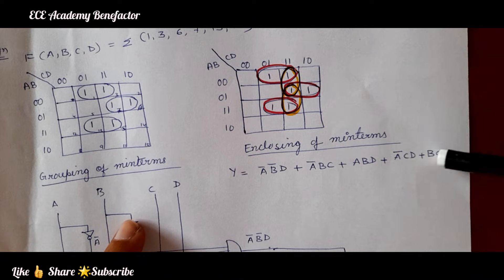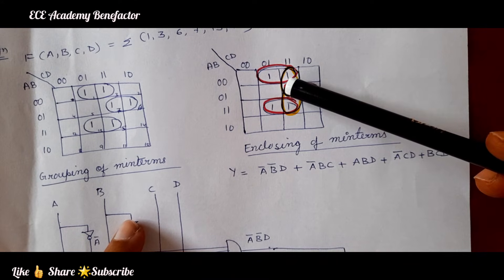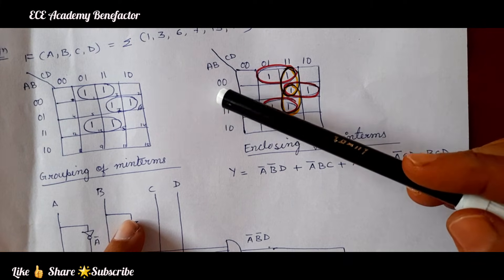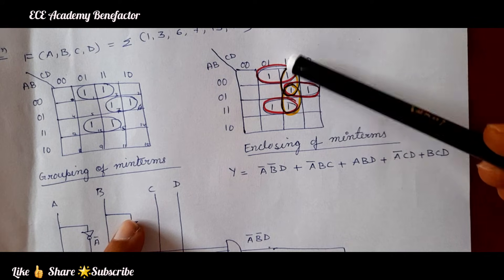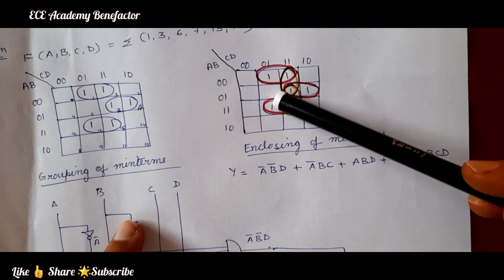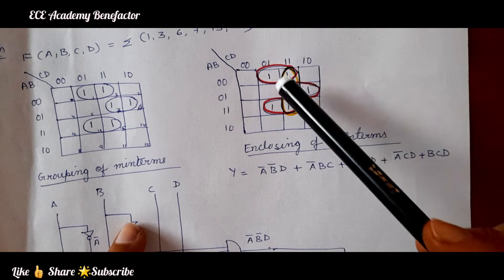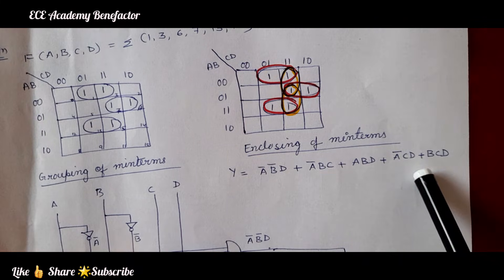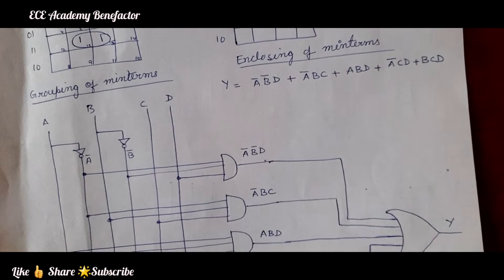Let us see how we get the term BCD. This is the group: 1 is common in these two rows, so B is common here. The column here is 1,1 — that is C and D. So for this group we are getting BCD. Likewise, after grouping you can write each term, write the final expression, and based on this you need to draw the logic diagram. Here we require A', B', C, and D.